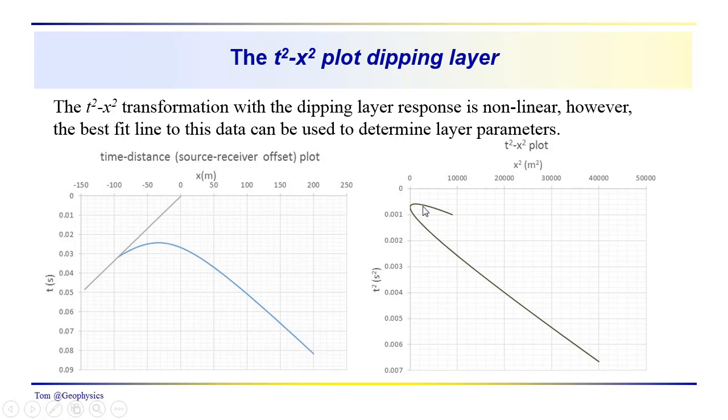I'll just point out here that these would be the up dip measurements, coming in earlier. These would be the down dip measurements. And our T0 squared, somewhere in here.